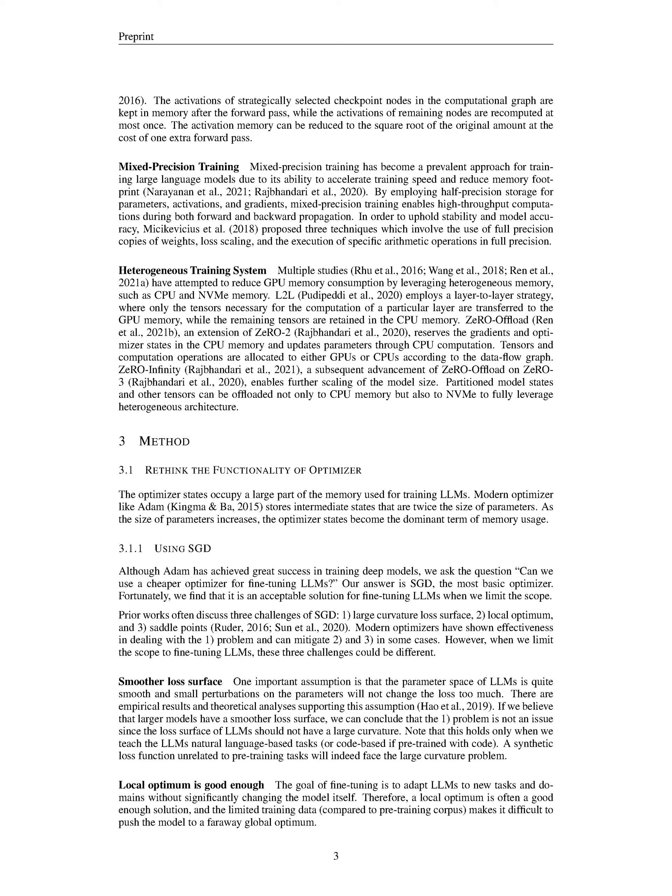Next, we'll touch on something known as a heterogeneous training system. Several studies have looked at ways to decrease the memory usage of GPUs, and this is where using a mix of different types of memory, such as CPU and NVMe memory, comes in. One strategy called L2L, or layer-to-layer, only transfers the tensors needed for the computation of a specific layer to the GPU memory, while keeping the remaining tensors in the CPU memory, effectively making use of both types of memory.